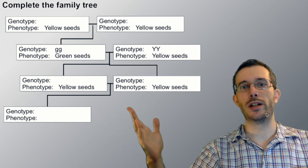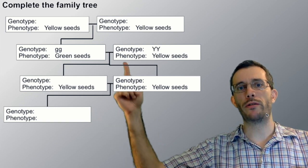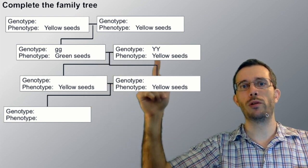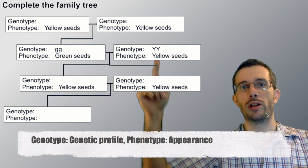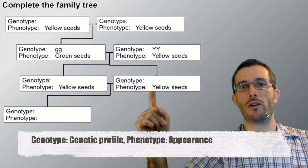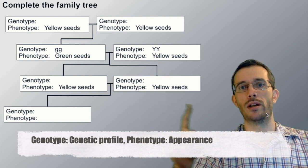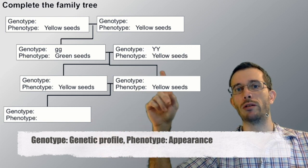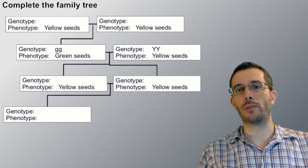We have this family tree over here where we have multiple generations. For some of them we have the full information about genotype and phenotype, and others we have gaps and a complete gap over here. Our task is to figure out the missing parts.